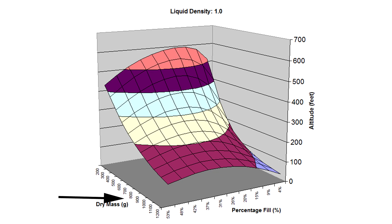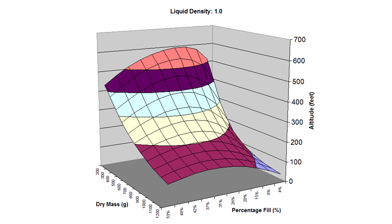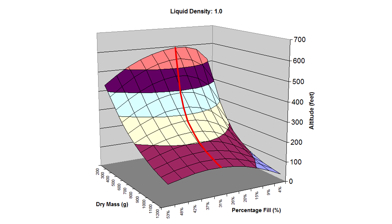Each of the points on this surface represents one simulation run. Along the bottom axis we have the rocket's dry weight, while the other axis is the water fill amount as a percentage of the total volume, and vertically we have the predicted altitude. The liquid density for these first simulations was set to one, representing water. This line represents the optimal water amount needed to reach maximum altitude. For this rocket that weighs 550 grams, we can see that we need close to 29% water fill to reach maximum altitude.